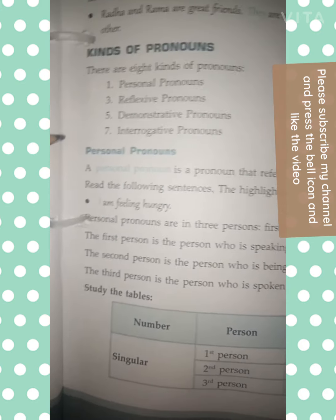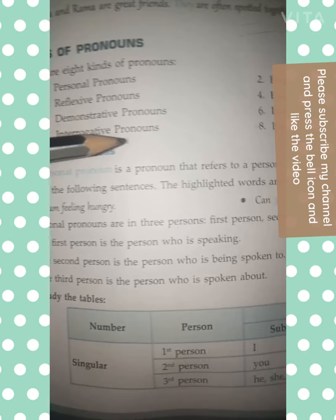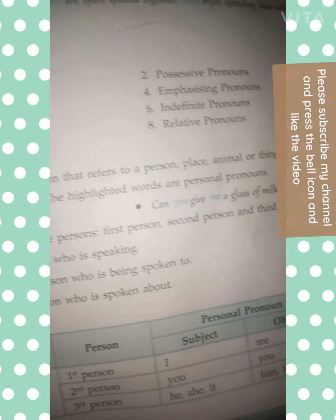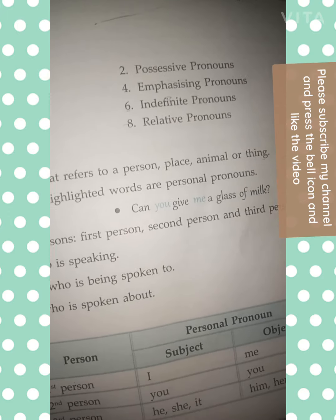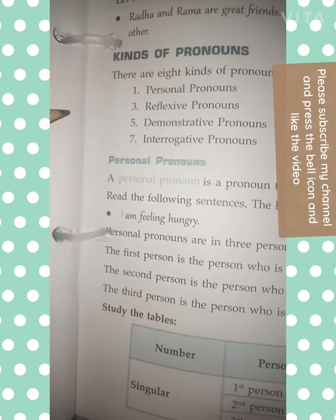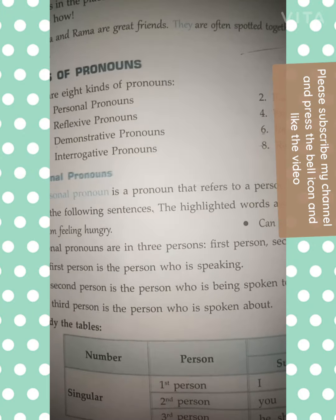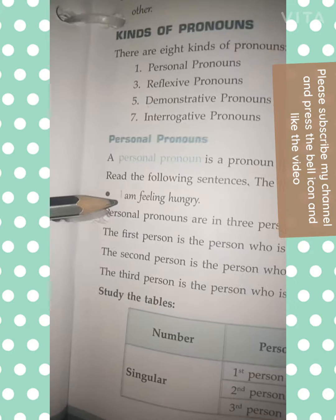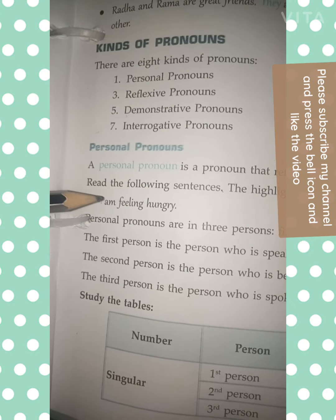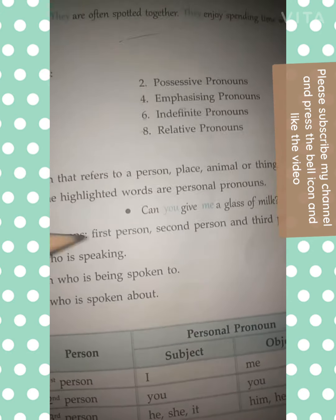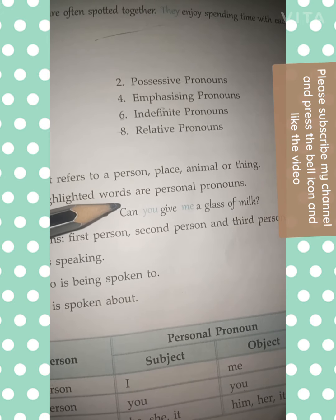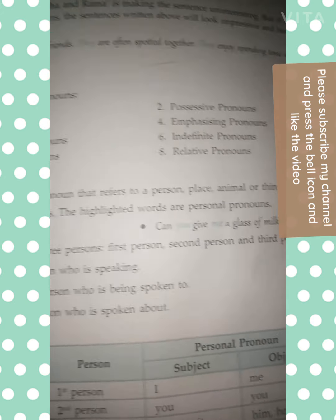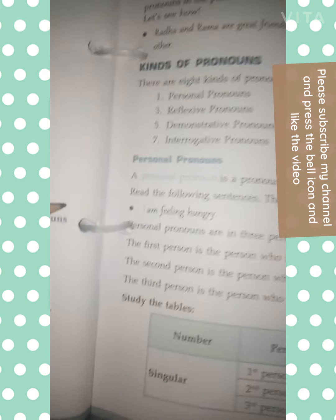Personal pronoun. A personal pronoun is a pronoun that refers to a person, place, animal, or thing. Read the following sentences — the highlighted words are personal pronouns. For example: 'I am feeling hungry' — here 'I' is a personal pronoun. 'Can you give me a glass of milk?' — here 'you' and 'me' are personal pronouns.